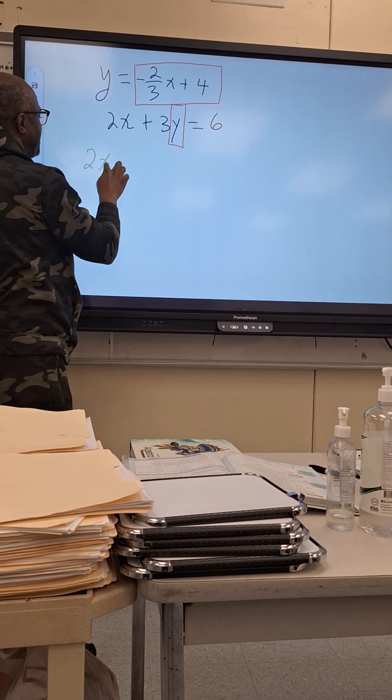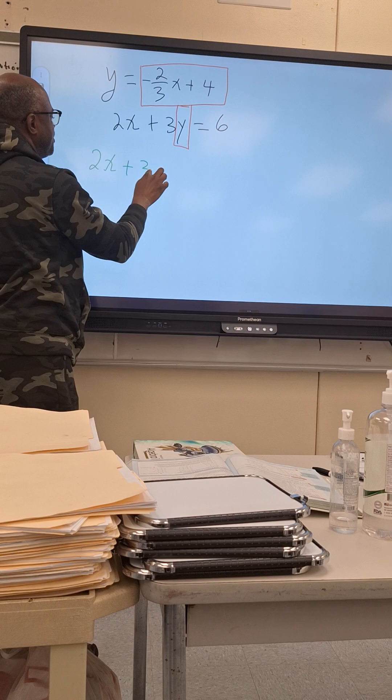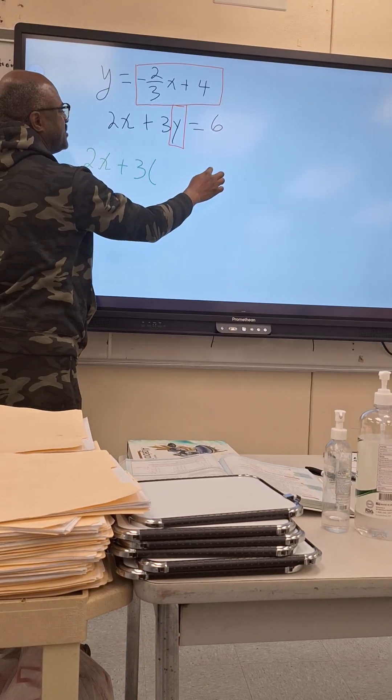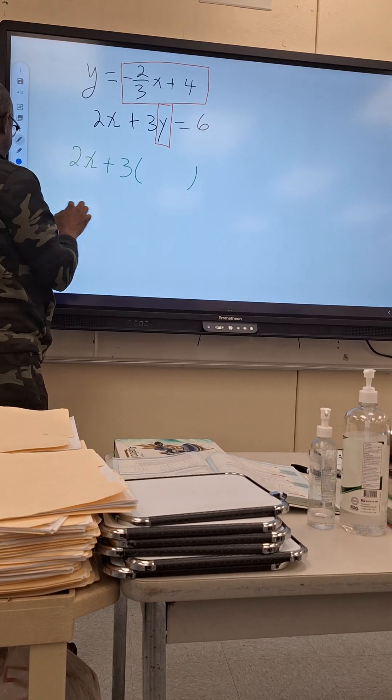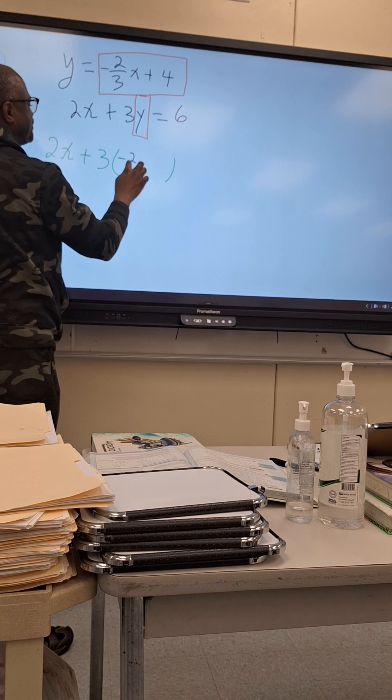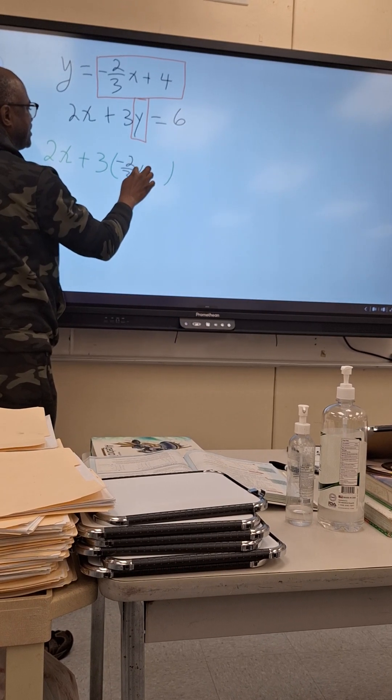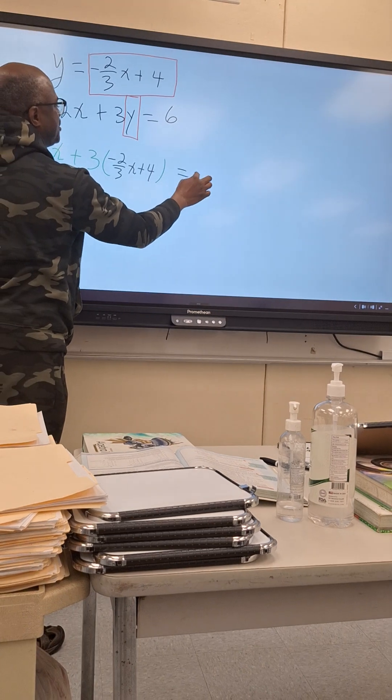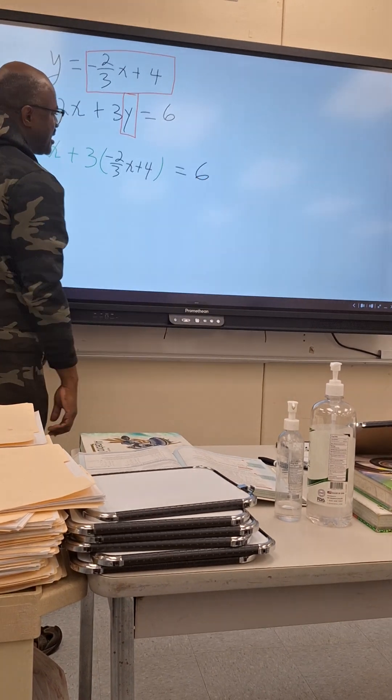I will have 3x plus 3 times open parentheses and we put our expression which is what? Negative 2/3 x plus 4 is equal to 6. And the game is on.